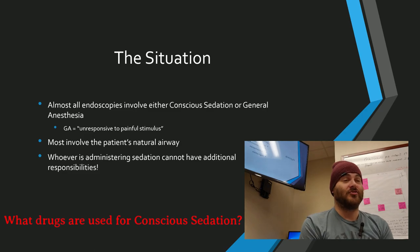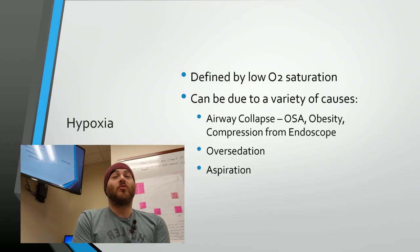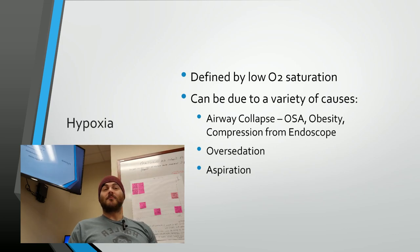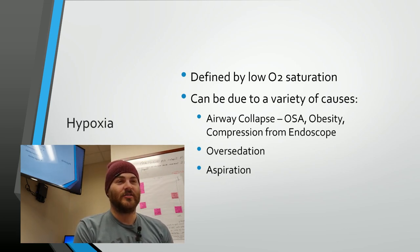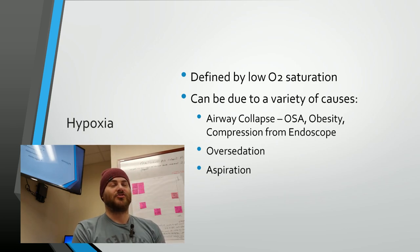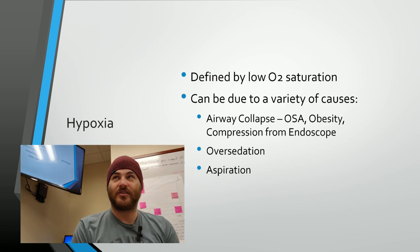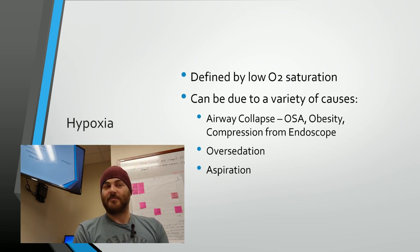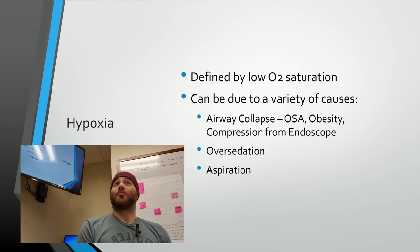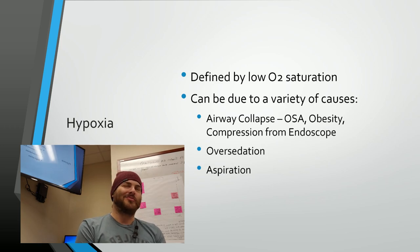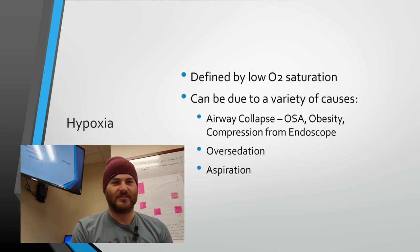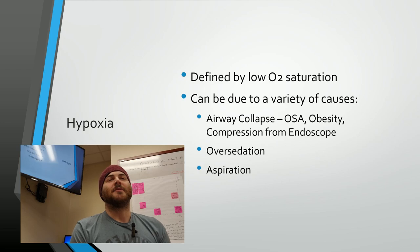Nurses usually use fentanyl and versed. Now, the first and most common issue in endoscopy is hypoxia, defined as insufficient oxygen in the bloodstream, detected by a low pulse ox reading on a finger. In endoscopy, you can pretty much guarantee that if the pulse ox is low, the patient is not receiving adequate oxygen.